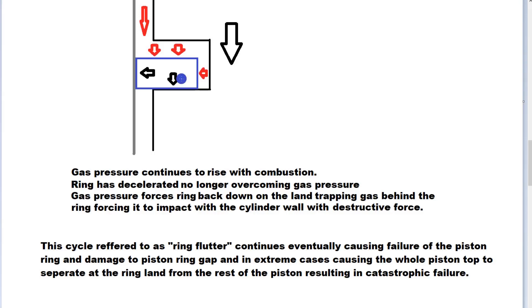This is the ultimate maximum RPM limit of the engine, the piston ring, not the piston itself. Eventually this continues and causes failure of the piston ring and damage to the piston ring gap, because the piston ring is jumping up and then slamming back down on the land and into the wall. The piston ring cracks in pretty quick order, and in extreme cases it can actually knock the whole crown of the piston off, separating at the piston ring land.